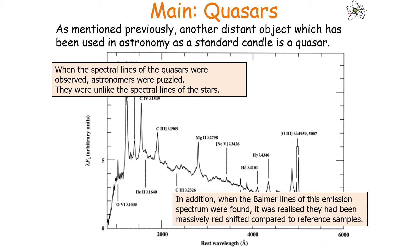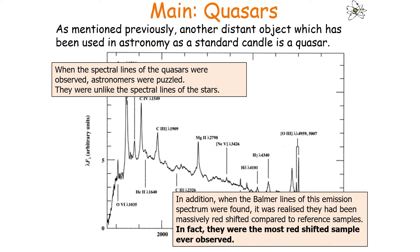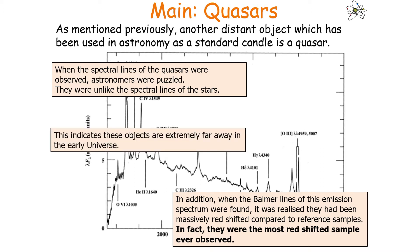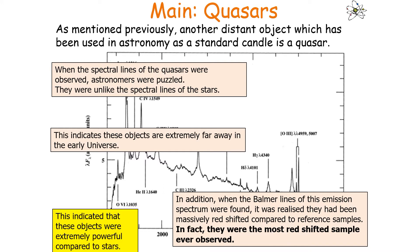When the Balmer lines of this emission spectrum were found, it was realised that they had been massively redshifted compared to reference samples. In fact, they were the most redshifted sample ever observed. This indicated that these objects are extremely far away and are in our early universe, and it also backed up the idea that these objects were extremely powerful compared to stars, because they were so far away yet still observable.